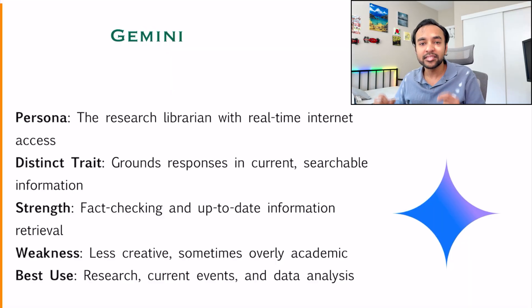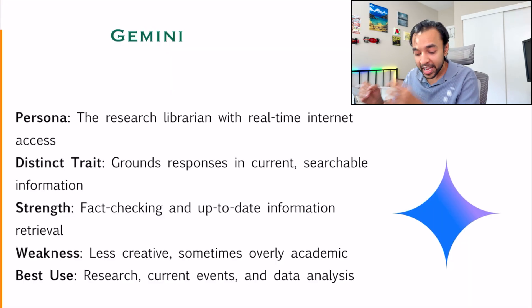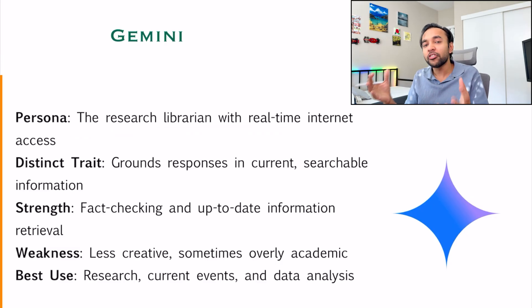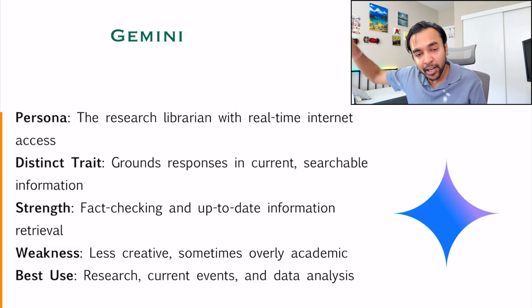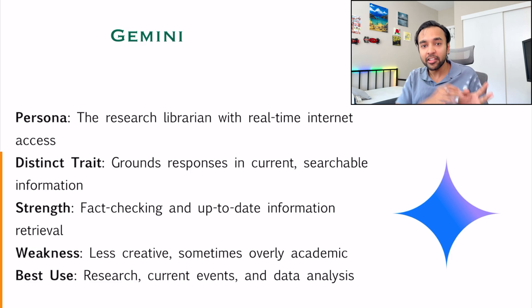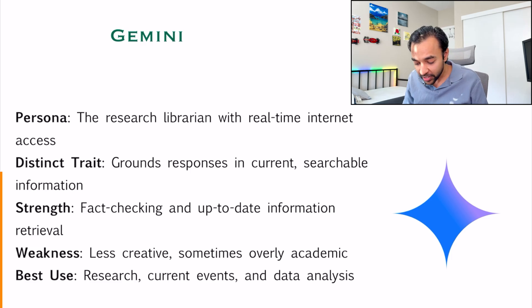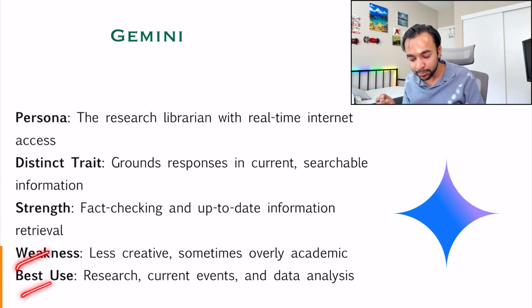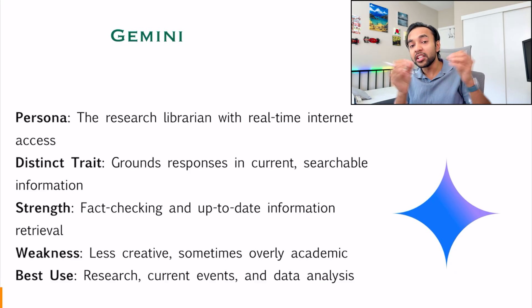The next model is Gemini, offered by Google. Its persona is that of a research librarian who will try to do Google searches and then give a response to you. It has its own distinct traits, strengths, and weaknesses. Whenever you are trying to research or want the latest information, Gemini might be more helpful for you.